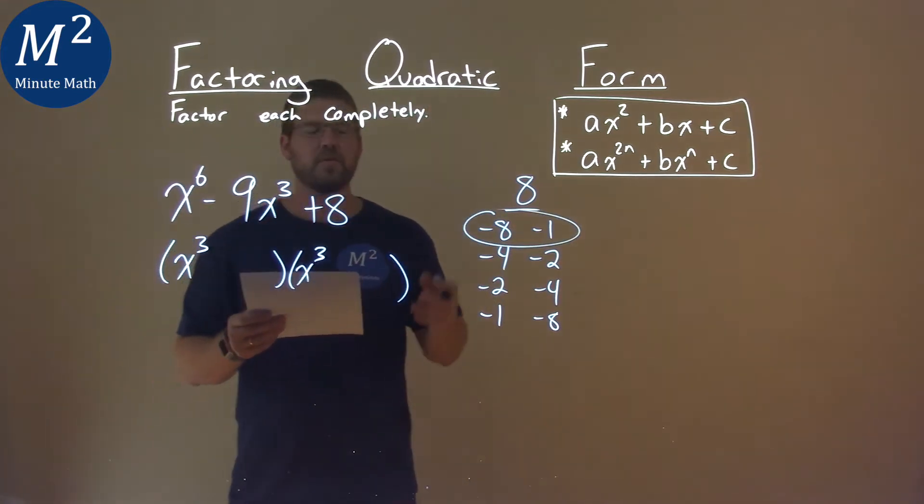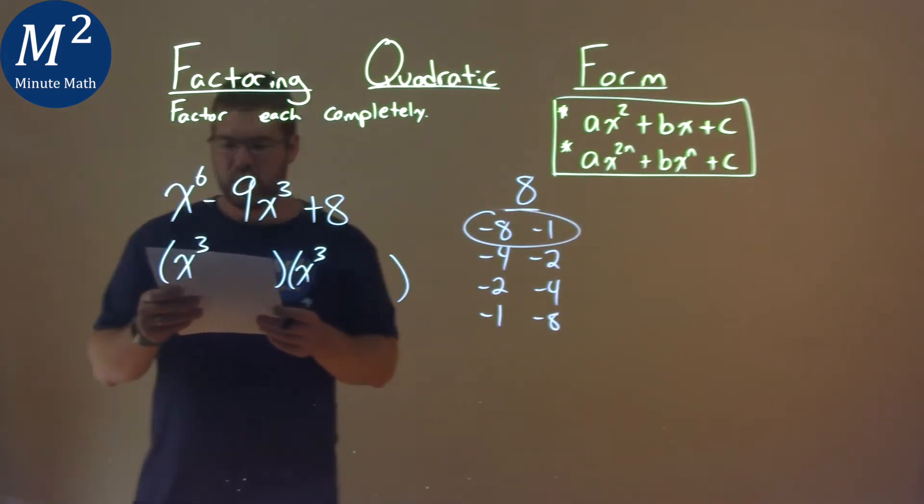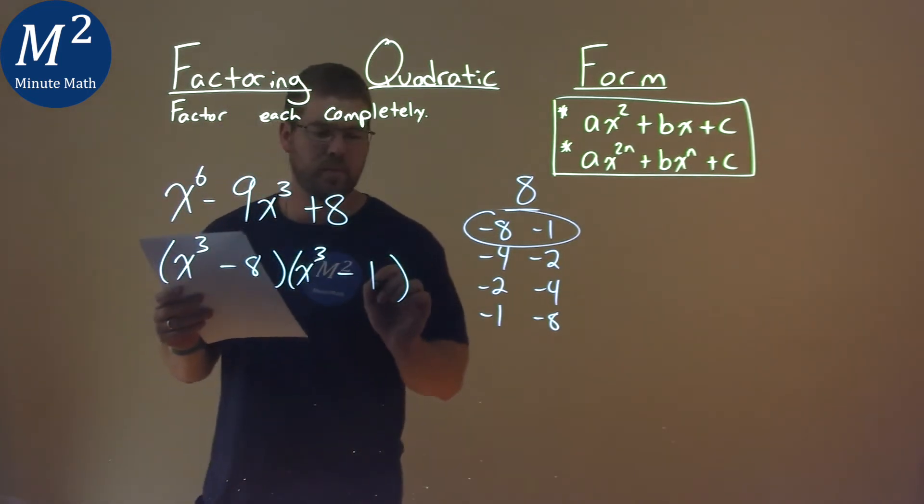Those two numbers multiplied together, positive 8, and add to be a negative 9. So we have x to the third minus 8, and x to the third minus 1.